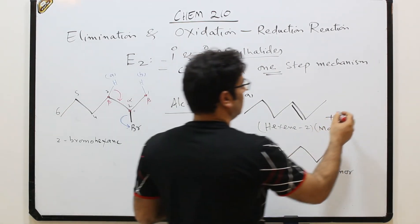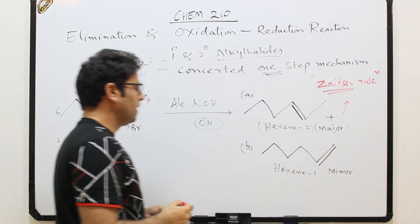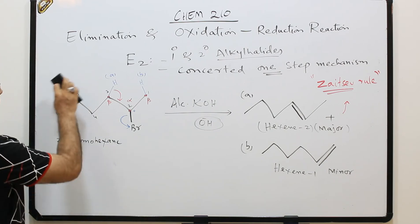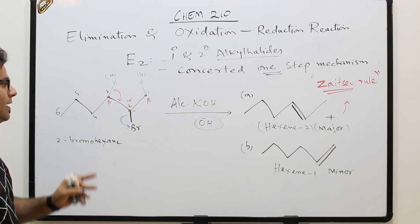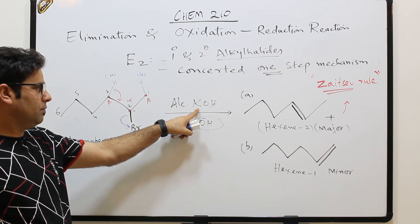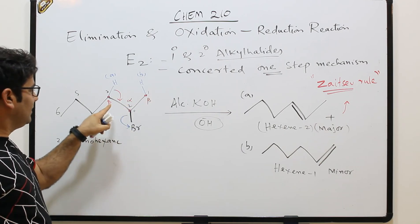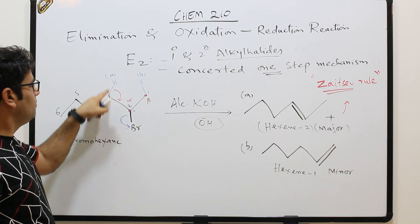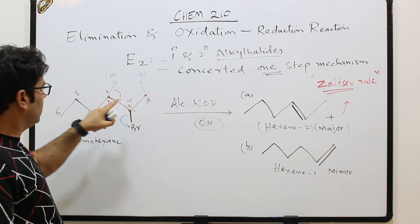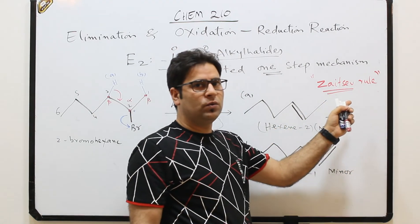This is decided as per Zaitsev's rule. The mechanism: bromine comes out, connects with K⁺ to form KBr. There is possibility of hydrogen abstraction from either beta carbon. If abstracted from that carbon it becomes hex-2-ene; if from the other it becomes hex-1-ene. Hex-2-ene is the major product, hex-1-ene is the minor product, as per Zaitsev's rule.